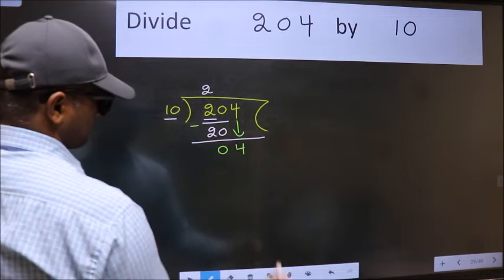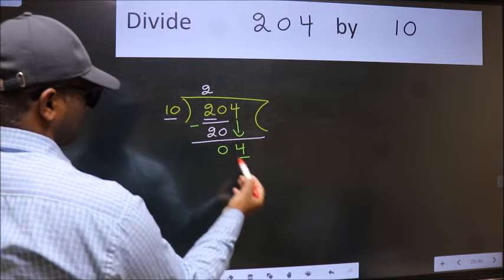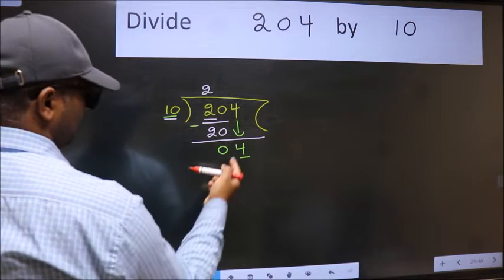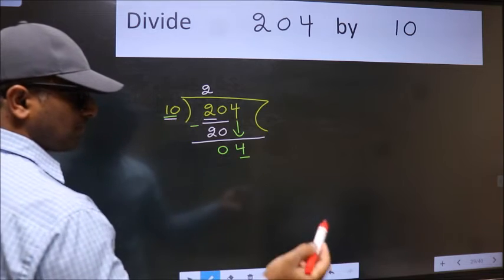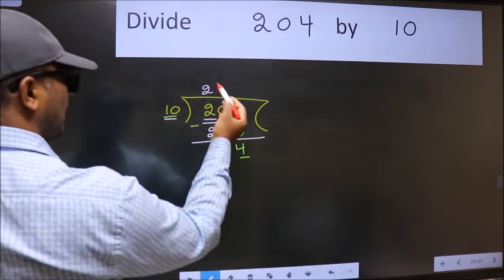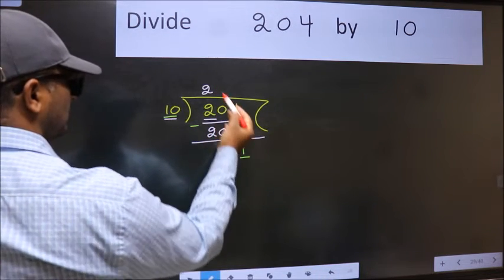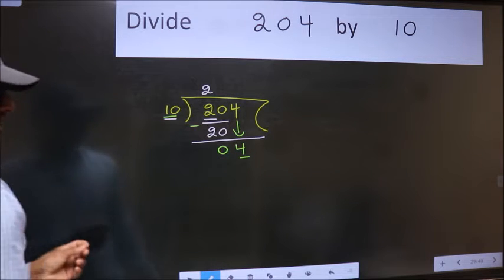And the mistake is this. Here we have 4 and here 10. 4 is smaller than 10. So what many do is they directly put dot, take 0, which is wrong.